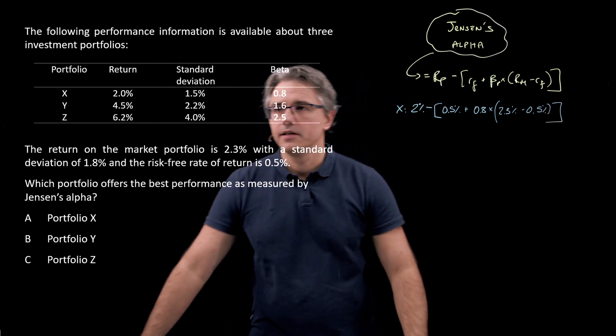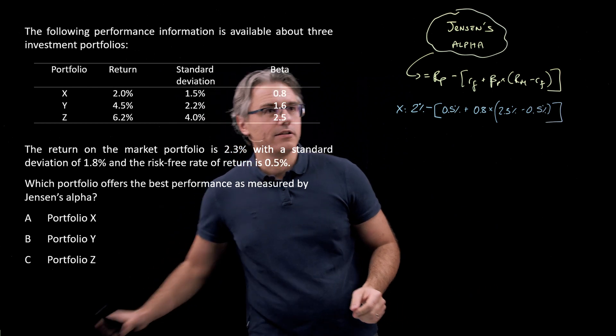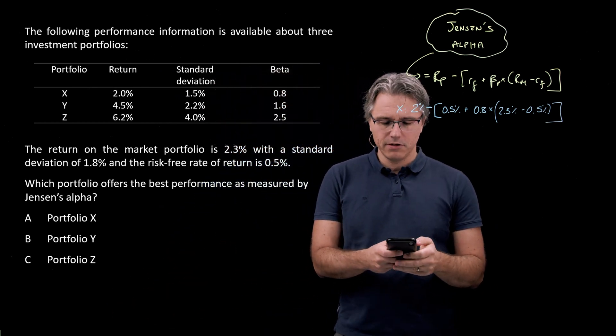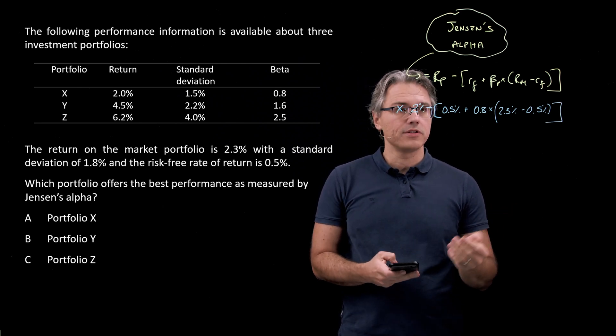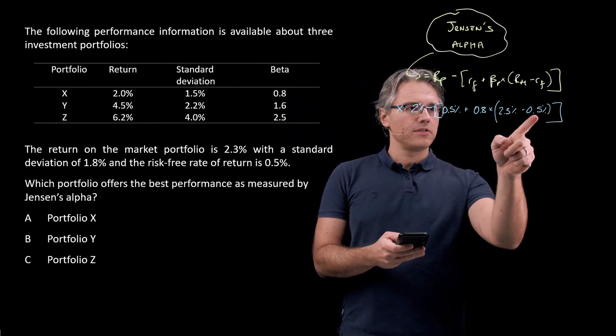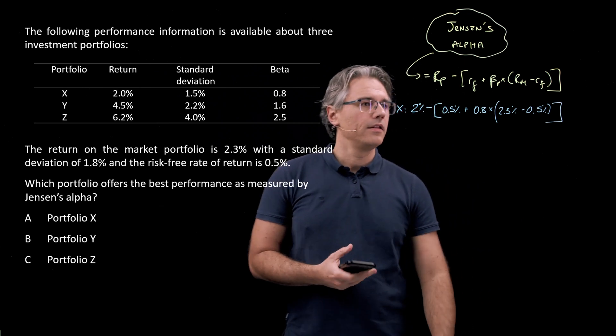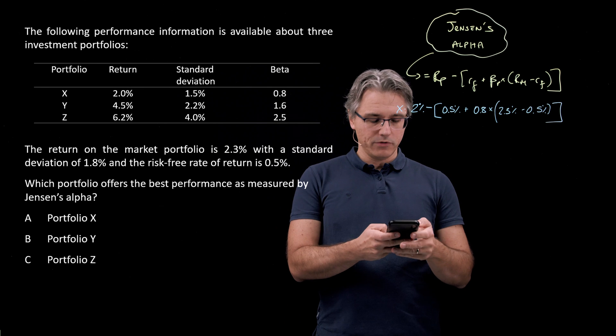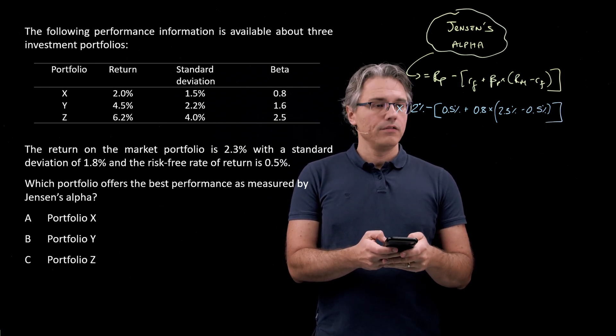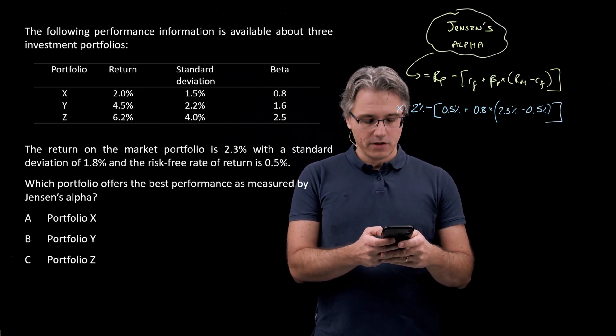I'm going to take my phone with the calculator and quickly do this, not really sharing my phone screen with you, as there is nothing terribly exciting happening in terms of the computations. So let me start with this 2.3 minus 0.5. That's obviously 1.8 times the beta of 0.8.